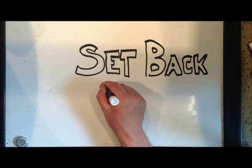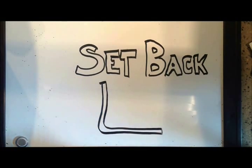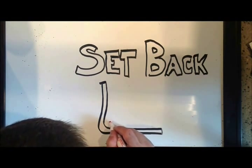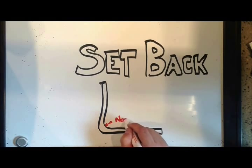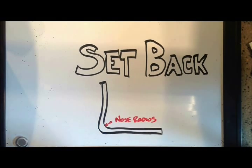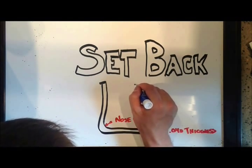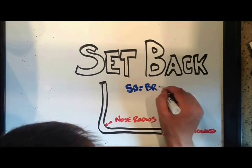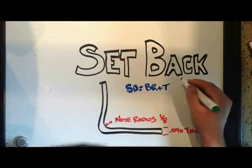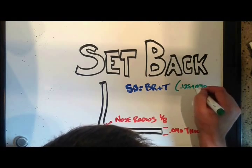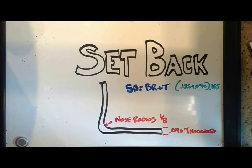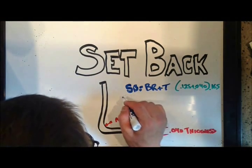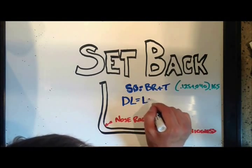Setback is a formula that we use in order to figure out the actual final developed length of each of the flat legs on the 90 degree bend. Again, the two most important key features that we need to know are what is our radius that we're bending the material around, and what is the thickness of the material. So setback, Sb, is actually equal to the bend radius plus the thickness of the material. So in this case, it's one-eighth point one-two-five plus zero-four-zero. So our total setback is 0.165.